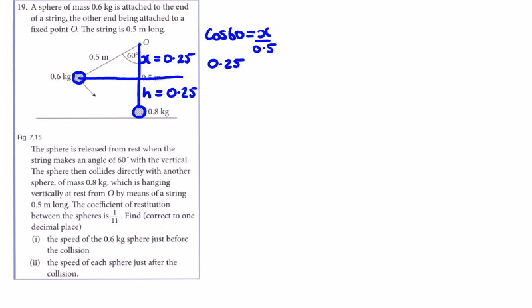We can get that straight away. This looks like kinetic and potential energy. We're looking for the speed of the 0.6 kg sphere just before the collision, so we have potential energy and kinetic energy before equals potential energy and kinetic energy afterwards.